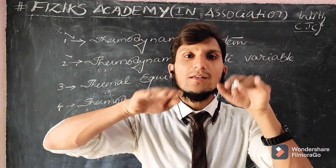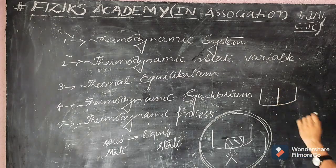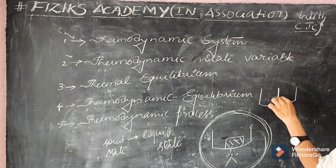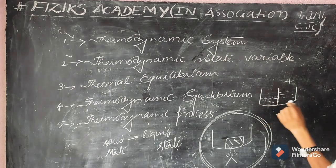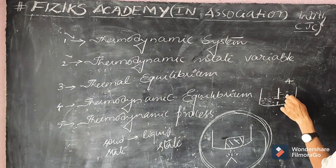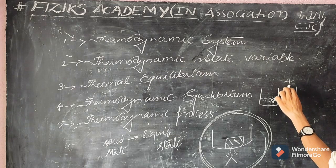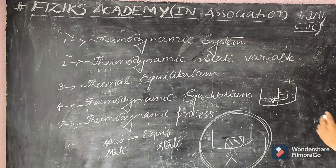Now, what is thermal equilibrium? Two objects are said to be in thermal equilibrium if they are at the same temperature. Consider a container with a wall and a small hole. Initially the hole is closed — on side A there is hot water and on side B there is cold water. When the hole is opened, heat energy transfers from the hot region to the cool region, from high temperature to low temperature.